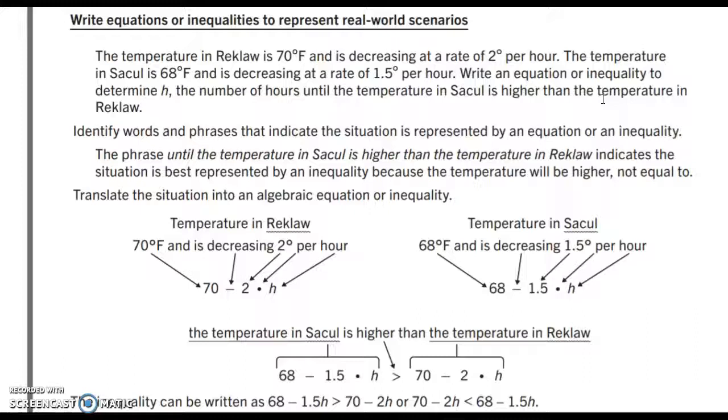We're going to translate this situation into an algebraic equation or inequality. If you notice here, we show the temperature in Reclaw being 70 degrees. It is decreasing, which we associate with subtraction, at a rate of 2 degrees per hour. So, that would be symbolized by 2 times H, 2 degrees times the number of hours that we need to figure out.